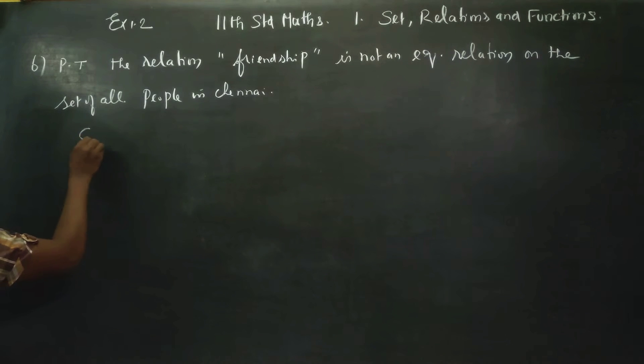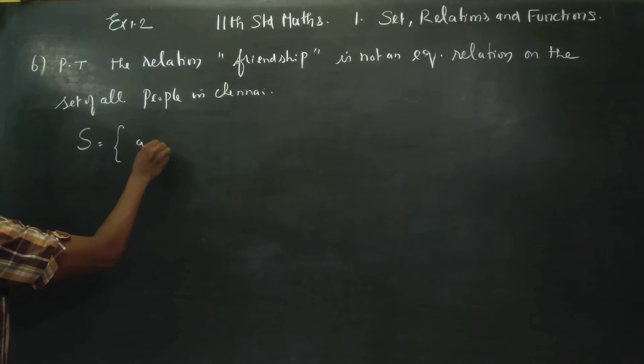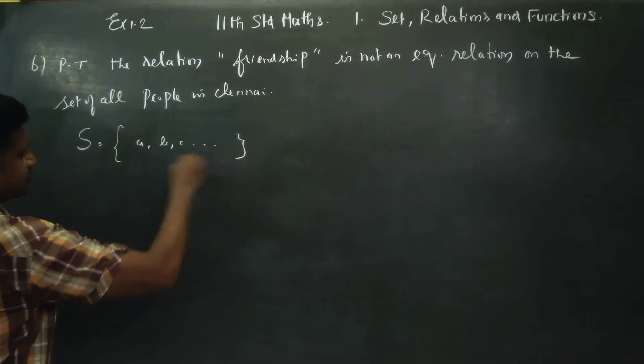Let S be the set of all the people in Chennai: {A, B, C, ...} such that we define the friendship relation R on S.